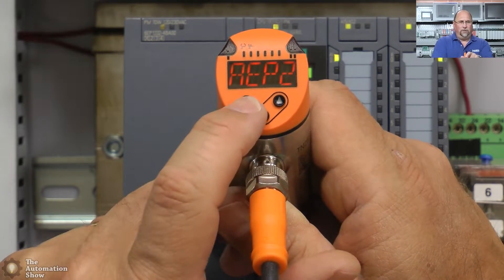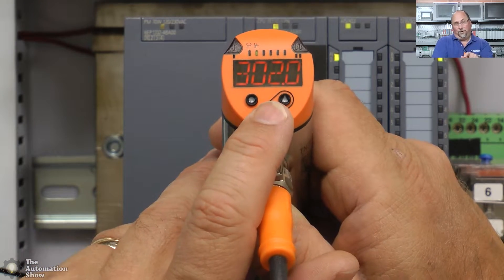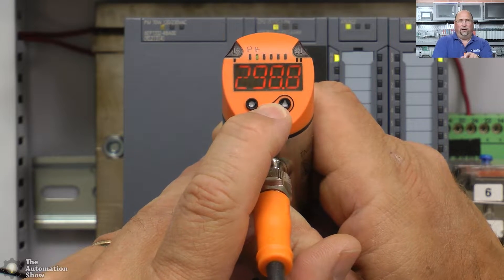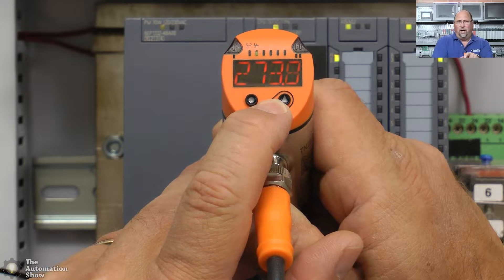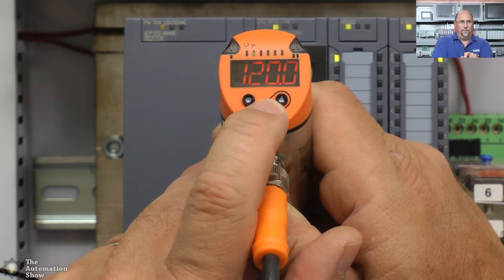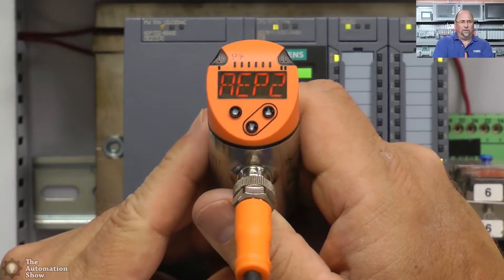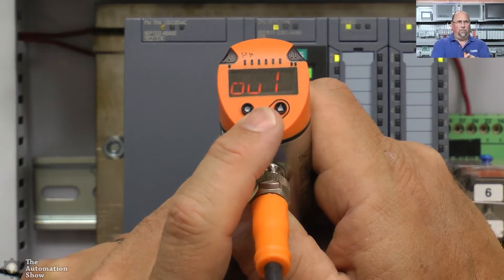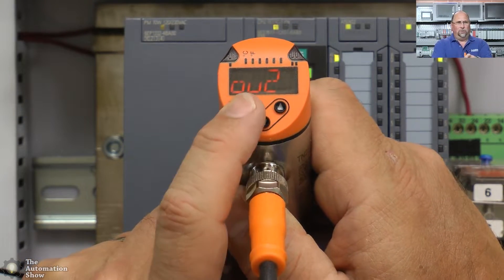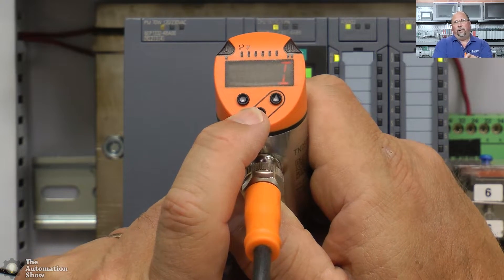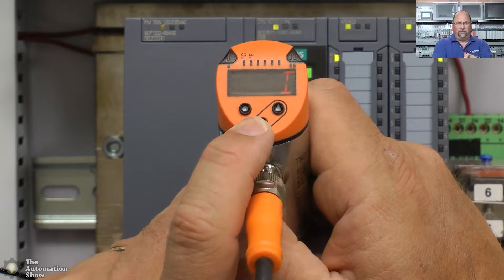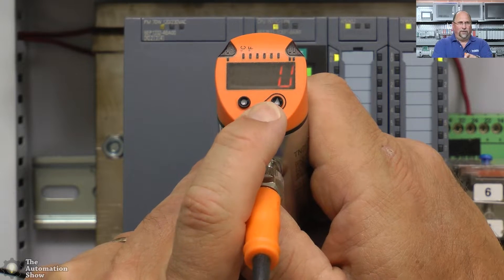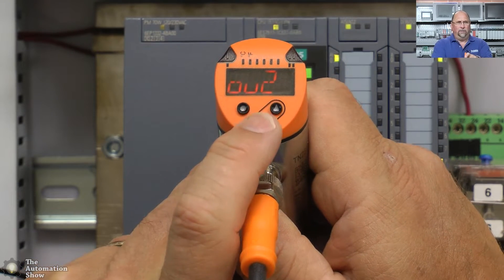Now let's go back into the extended functions. I've already set output one. Output two - let's take a look at that. Right now it's set for current, but I have it wired into the SM 1500 as voltage. So we're going to hold down the down arrow key and change it to voltage.